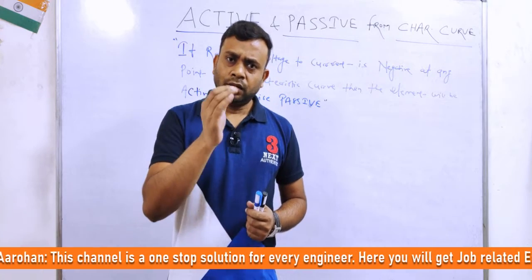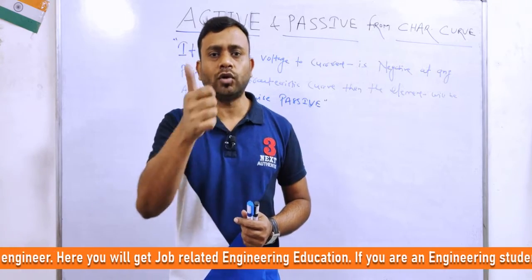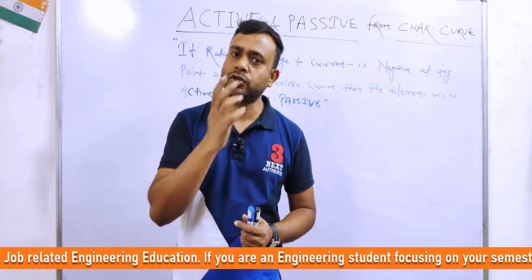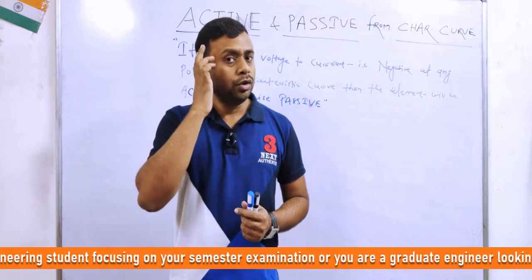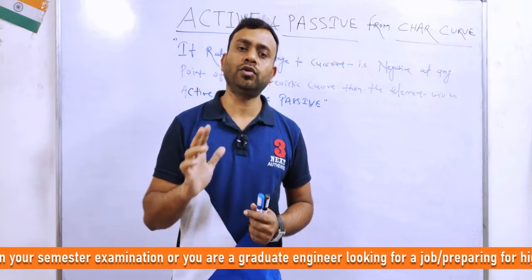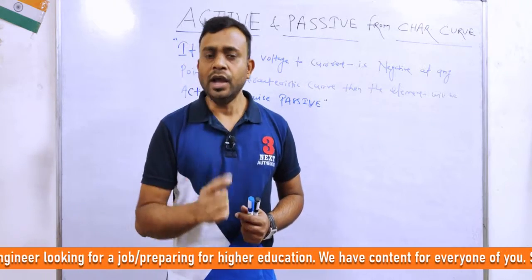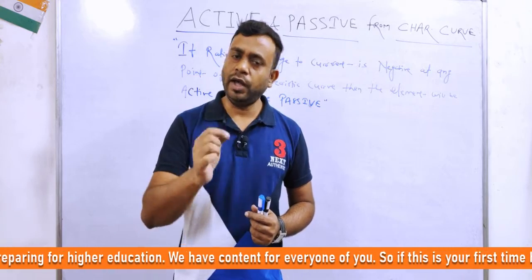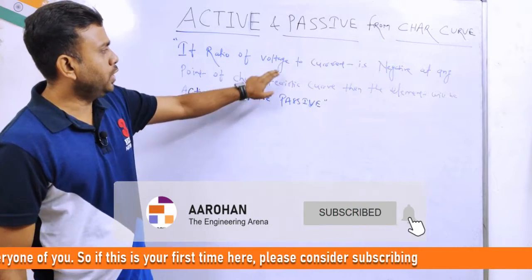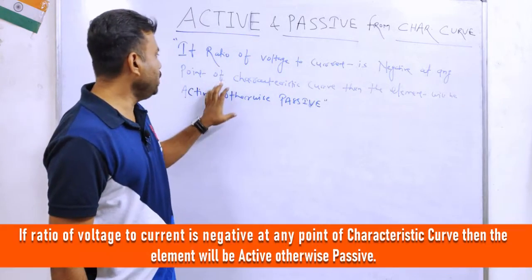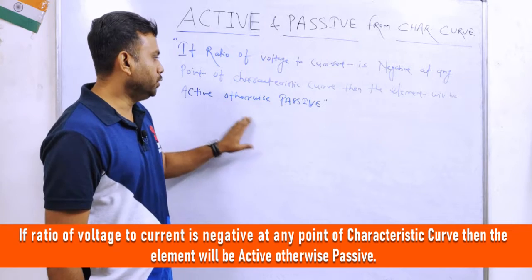तो इस topic को discuss करने से पहले, कि हम कैसे एक curve में identify करेंगे कि वो curve एक active और passive element के बारे में show कर रहा है — उसके लिए हमें एक concept को बहुत ज़्यादा mind पर रखना पड़ेगा। उस concept के basis पर हम किसी भी प्रकार की curve को बहुत ही easily identify कर सकते हैं। That important concept is: if the ratio of voltage to current (V/I) is negative at any point of the characteristic curve, then the element will be active, otherwise passive.